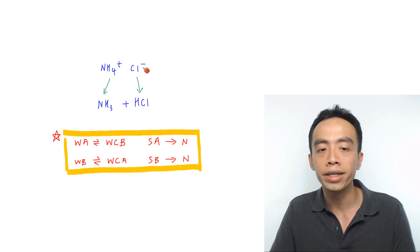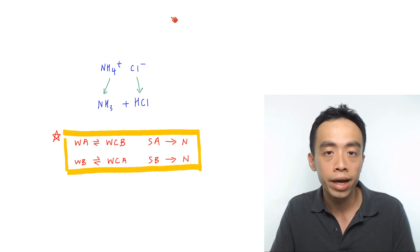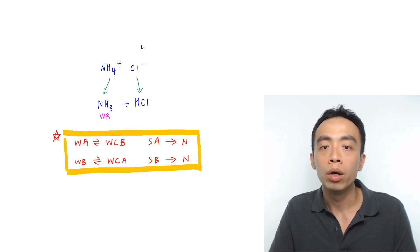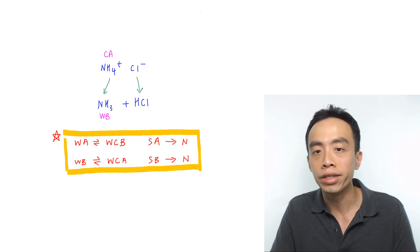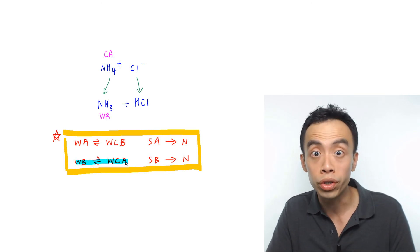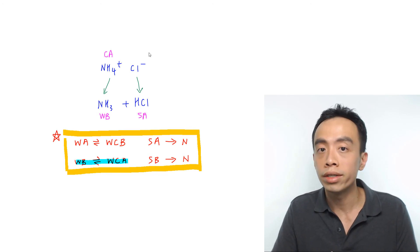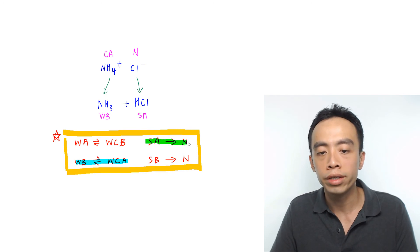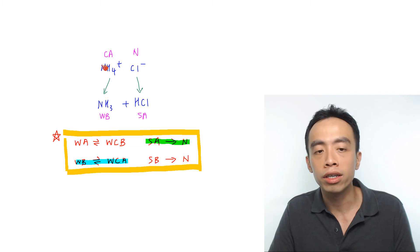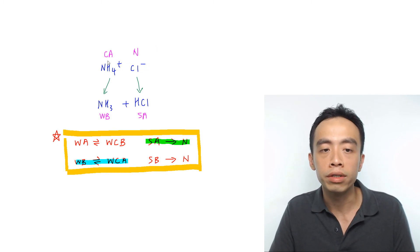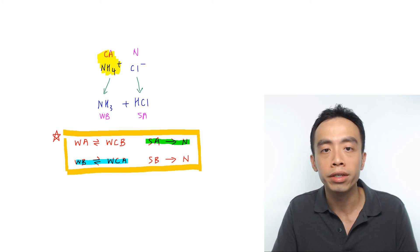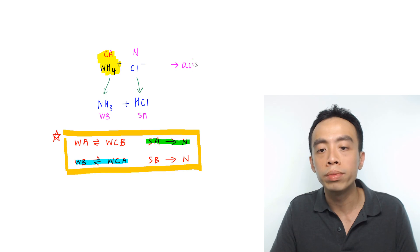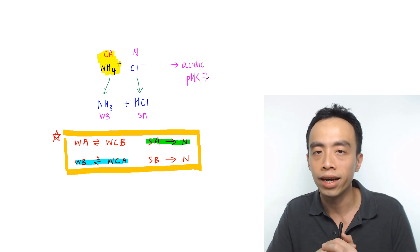We have one more example: NH₄⁺Cl⁻. NH₄⁺ comes from ammonia, and Cl⁻ comes from HCl. Ammonia is a weak base, and a weak base will give me a weak conjugate acid, so NH₄⁺ is my conjugate acid. HCl is a strong acid, so its counter-ion Cl⁻ is neutral. Since my cation is a conjugate acid and my anion is neutral, the pH of the solution will follow NH₄⁺. So the solution will be acidic, and the pH will be less than 7. Salt hydrolysis is actually very simple — it's nothing more than identifying whether the cation or anion is a conjugate acid of a weak base, or a conjugate base of a weak acid.